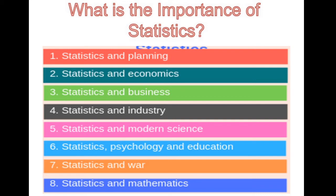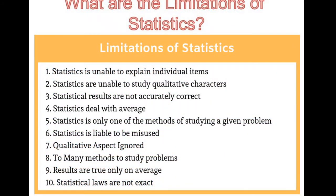What are the limitations of statistics? The first limitation is that statistics is unable to explain individual items. Statistics always studies a group of values instead of a single observation. For example, the study of income of one worker of a company is not statistics, but the study of incomes of 50 workers of the company forms statistics. The average income of a group of 1000 workers of a company forms statistics.